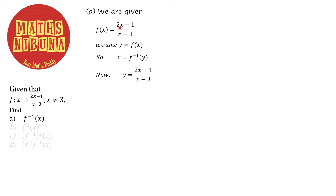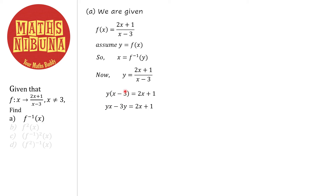Now, y = f(x) = (2x+1)/(x-3). This equation gives y in terms of x, so we need to find x in terms of y. We bring (x-3) to the other side, giving y(x-3) = 2x+1. Expanding: yx - 3y = 2x+1. Now rearrange, bringing all x terms to the left-hand side.